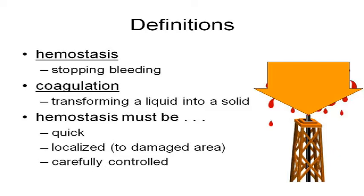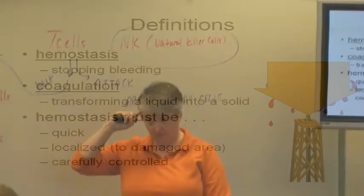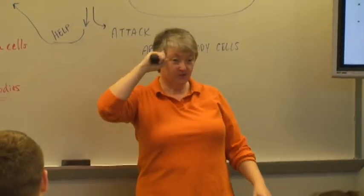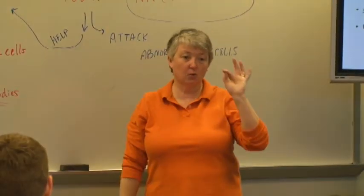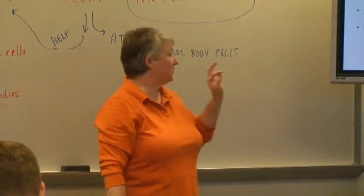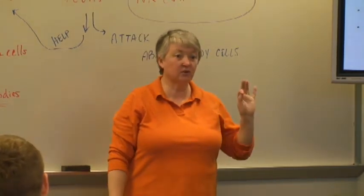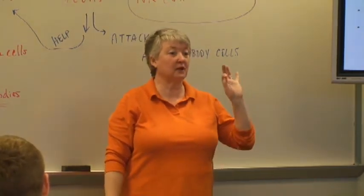Now, hemostasis — stopping bleeding. You want it to be quick; you want to form a clot quickly. But you only want to form the clot where you broke the blood vessel. If I cut my finger, I don't want a clot everywhere else. So you want it to form quickly, you want it to be localized, and you want this process to be controlled.